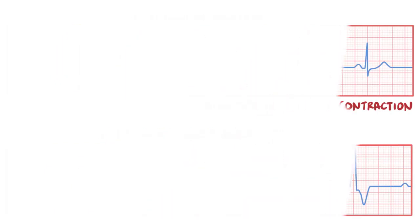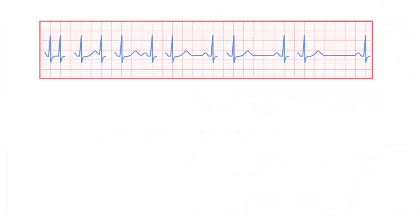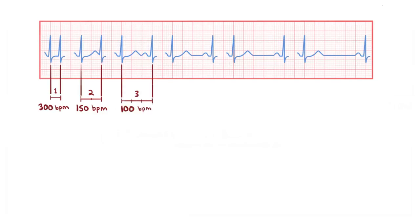Alright, as a quick recap, one quick way to estimate the heart rate on an ECG is to remember that one big box is 300 beats per minute, two big boxes is 150 beats per minute, three big boxes is 100 beats per minute, four big boxes is 75 beats per minute, five big boxes is 60 beats per minute, and six big boxes is 50 beats per minute.